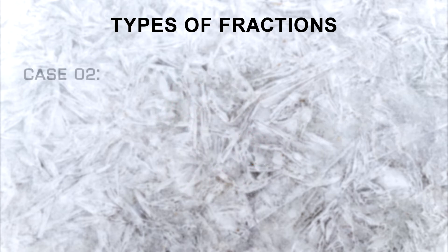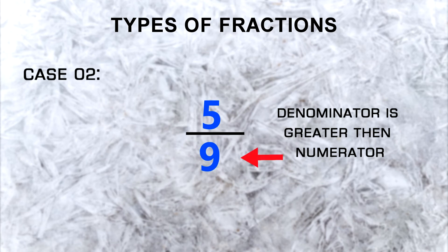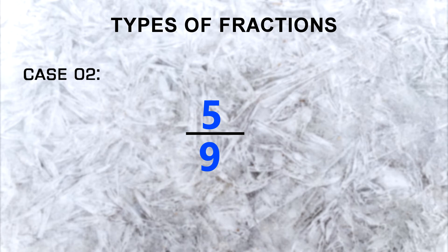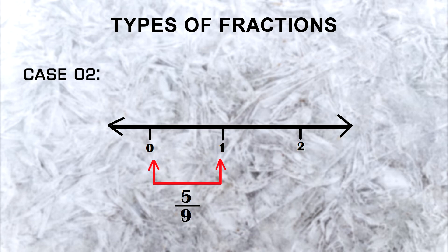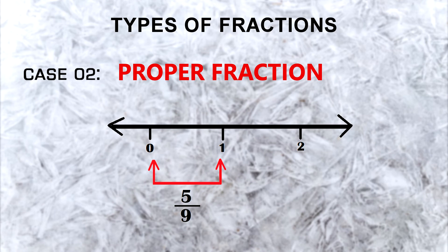The next rule says if the value of the bottom number is greater than the top number, then the value of a fraction will be greater than 0 but less than 1. That means it will be in this section of the number line.